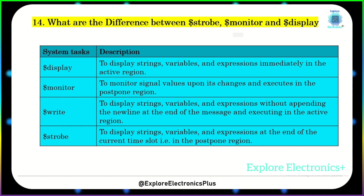What are the differences between $strobe, $monitor, and $display? $display displays strings, variables, and expressions immediately and executes in the active region. $monitor monitors signals and displays variables and expressions upon changes, executing in the postpone region. $write displays strings, variables, and expressions without appending a newline at the end of the message, executing in the active region. $strobe also displays strings, variables, and expressions but at the end of the current simulation time, that is in the postponed region.